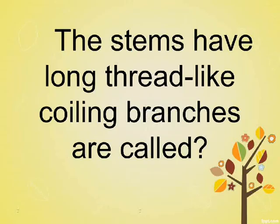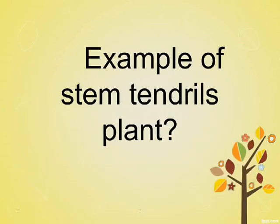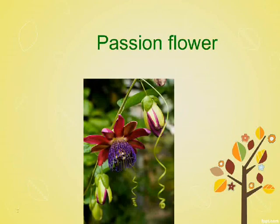Stems that have long thread-like coiling branches are called stem tendrils. An example of a stem tendril plant is the passion flower.